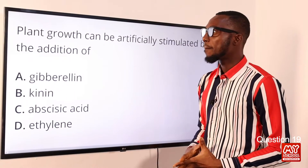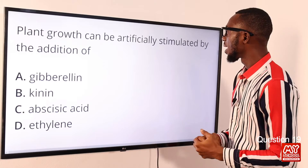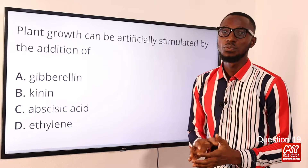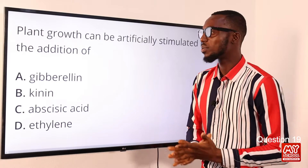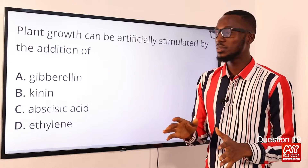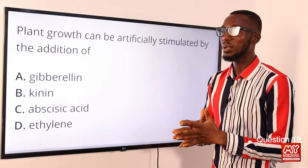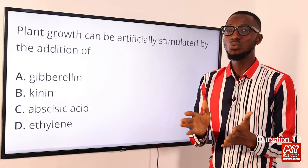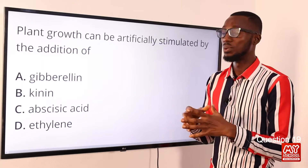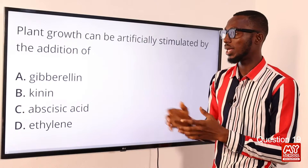Question 19. Plant growth can be artificially stimulated by the addition of what? When you talk about plant growth hormones or plant growth substances, we are looking at the major ones that influence growth. That is auxin and gibberellin.